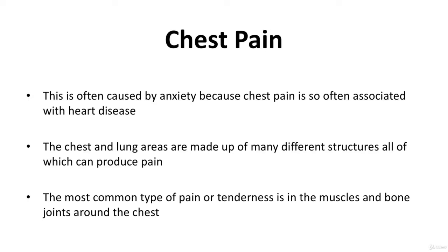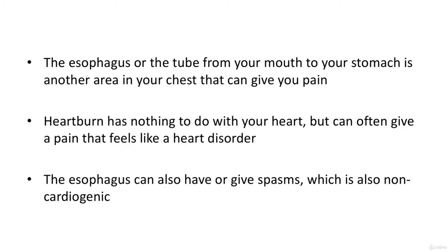The chest and lung areas are made up of many different structures, all of which can produce pain. The most common types of pain or tenderness are in the muscles and bone joints around the chest. The lining or pleura around the lungs can be associated with pain if it becomes inflamed or irritated, but the lungs do not contain nerve connections that induce feelings of pain. The esophagus — the tube from your mouth to your stomach — is another area that can give you pain. Heartburn, or refluxing, has nothing to do with your heart but can feel like a heart disorder. The esophagus can also give spasms, which is also non-cardiogenic.